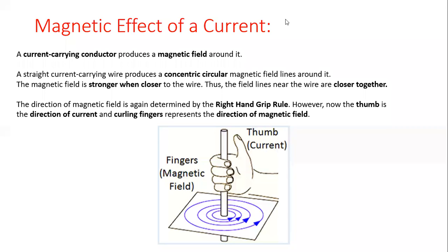We always place the thumb in the direction of current, and the curled fingers will show the direction of the magnetic field. When a current passes through a conductor, the magnetic field is produced in the form of concentric circles, and the direction of these circles is either clockwise or anticlockwise. So we need to find out the direction, and for this purpose we use the right hand grip rule.